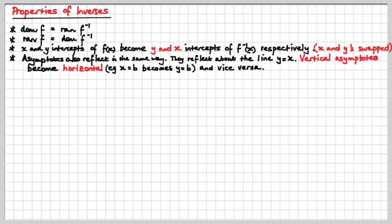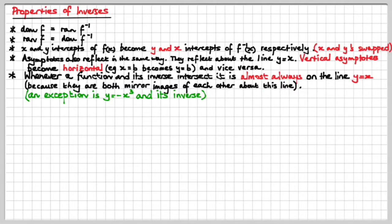We also know that the asymptotes also reflect in the same way. They reflect about the line y equals x. The result is that vertical asymptotes become horizontal. For example, x equals b becomes y equals b, and vice versa. That's also very, very handy to know.